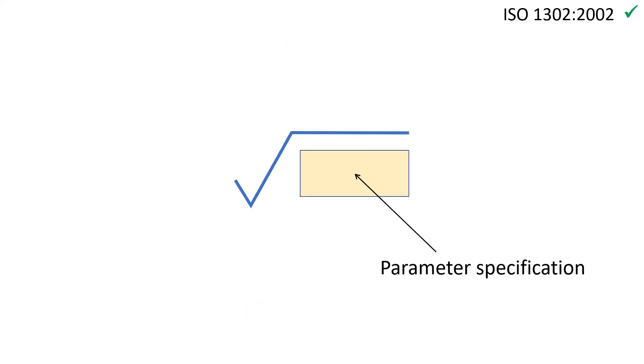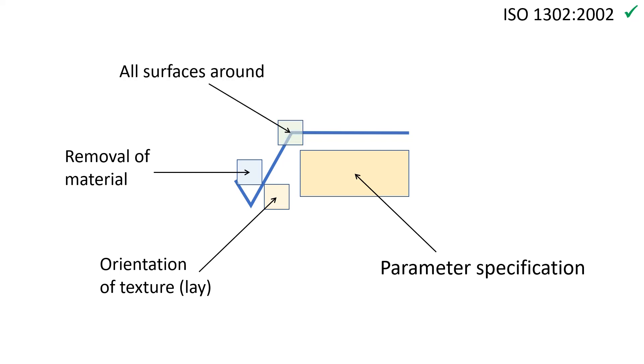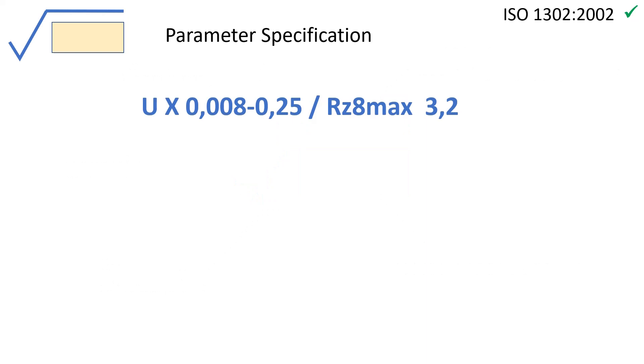Indications have to be written at specific places under and around the root symbol, as described in ISO 1302. The only mandatory indication is the parameter and its limit. An indication about removal of material during machining can be placed just above the triangle on the left. The direction of texture lay can be indicated on the right of the triangle. A specification may apply on all surfaces around the workpiece. In this case, a symbol is placed on the corner between the horizontal bar and the oblique line. And additional information about machining or materials can be indicated above the horizontal bar.